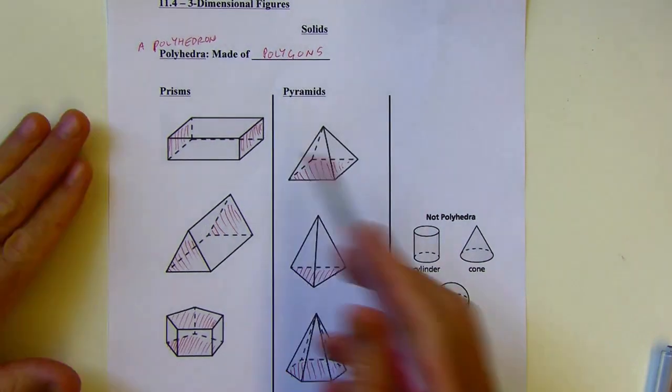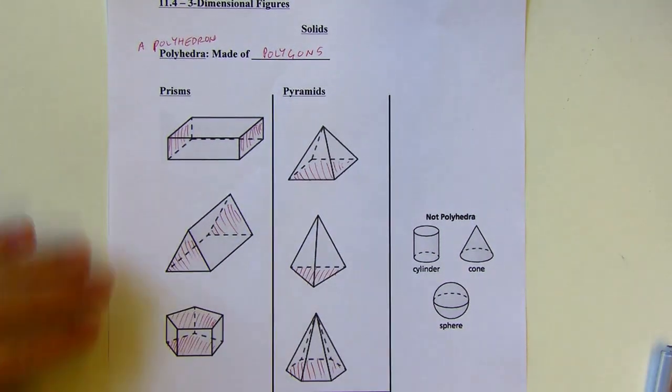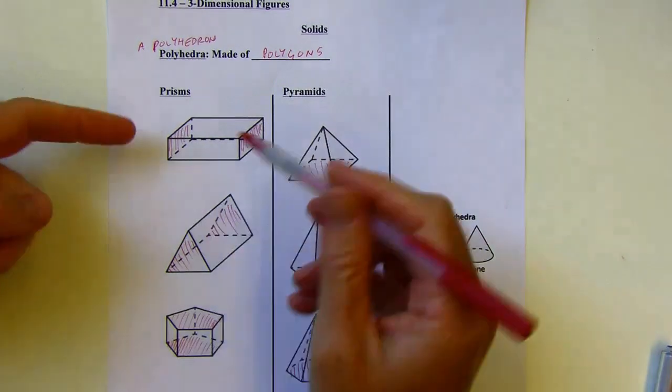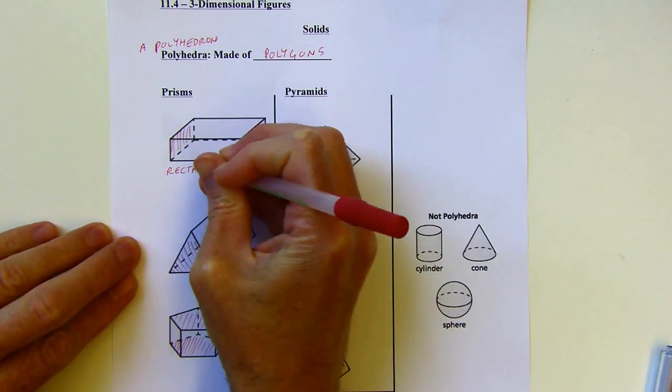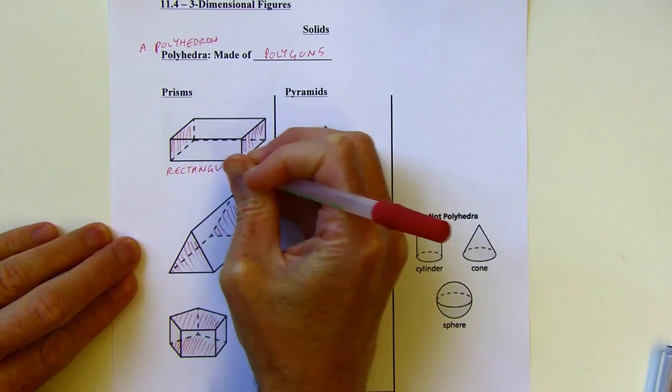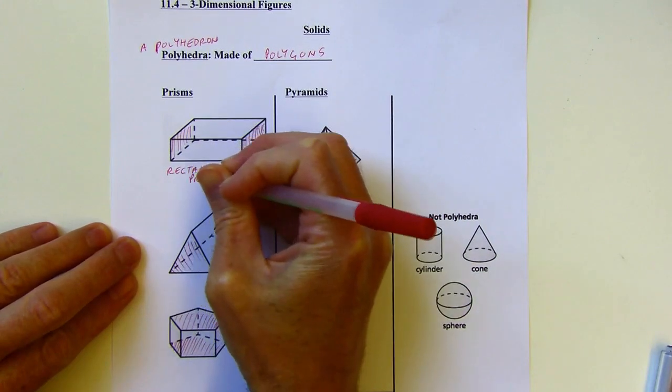And the way you name these figures, all of these prisms and pyramids, you name them by the bases. So this is a rectangular prism.